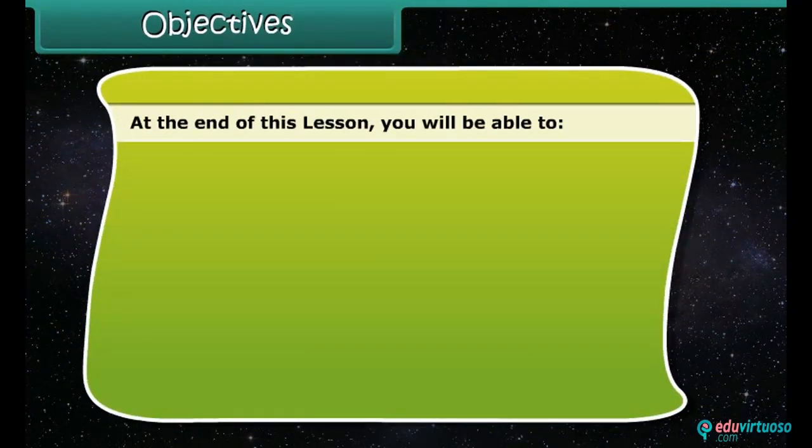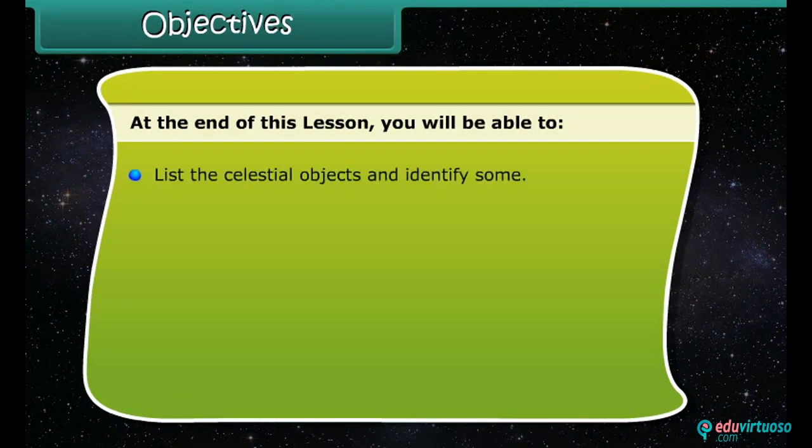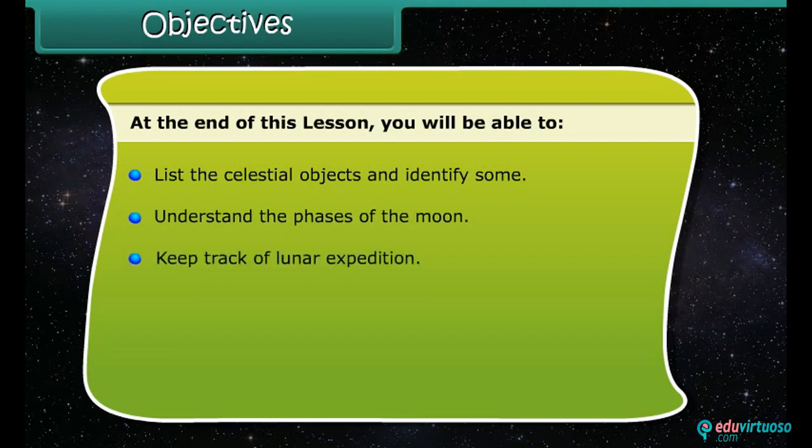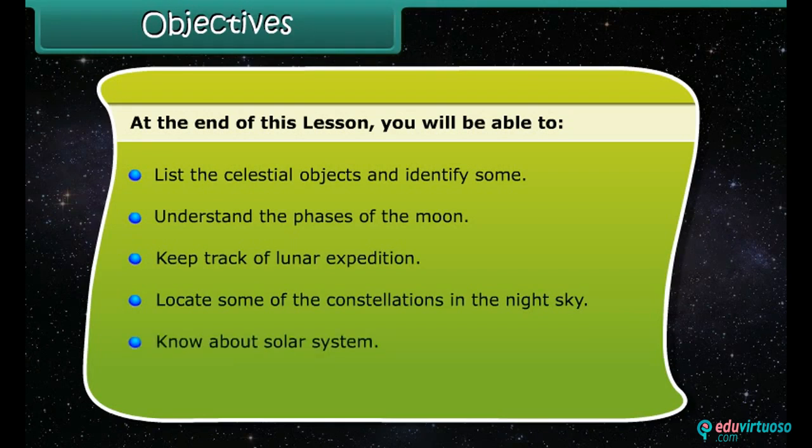At the end of this lesson, you will be able to list the celestial objects and identify some, understand the phases of the Moon, keep track of lunar expedition, locate some of the constellations in the night sky, know about solar system, and explain the role of artificial satellites.